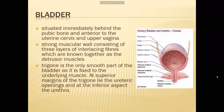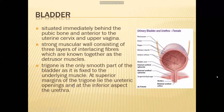The bladder is situated immediately behind the pubic bone and anterior to the uterine cervix and upper vagina. It is composed of a strong muscular wall of three layers of interlacing fibers known as the detrusor muscle. The trigone is the only smooth part of the bladder, fixed to the underlying muscle. At the superior margins of the trigone lie the ureteric openings, and at the inferior aspect is the urethral opening. Blood supply is from superior and inferior vesical arteries originating from the internal iliac artery.